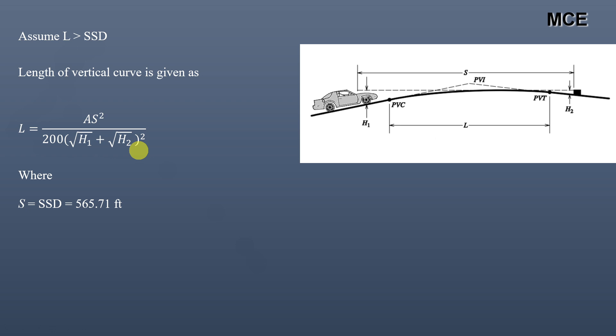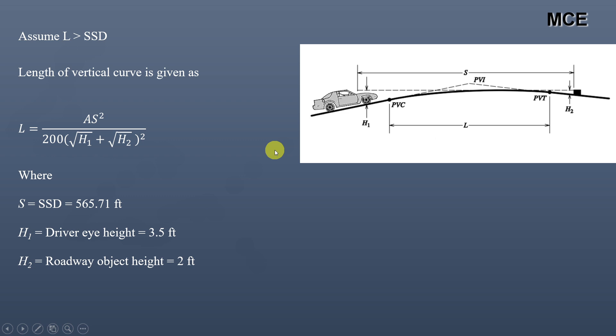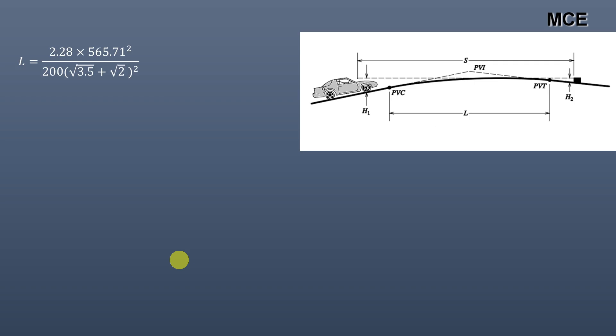S equals 565.71 feet (calculated previously). h1 is the driver's eye height, which per AASHTO is 3.5 feet. h2 is the roadway object height, which per AASHTO is 2 feet. A is the absolute grade difference of 2.28%. Substituting these values: L = (2.28 × 565.71²) / [200 × (√3.5 + √2)²], which equals 338.1 feet.